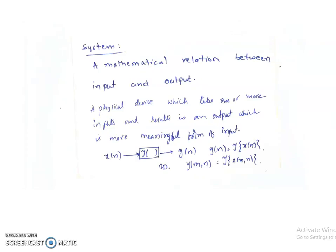What is a system? A system is a mathematical relation between input and output, where the output is a more meaningful or more desirable form of the input. Or it can be a physical device which takes one or more inputs and produces at least one output. So if the input signal is x(n), then y(n) is the output signal, and y(n) equals the transformation on x(n) — meaning an operation on x(n).